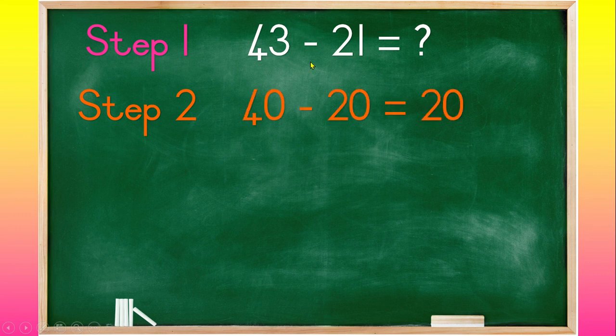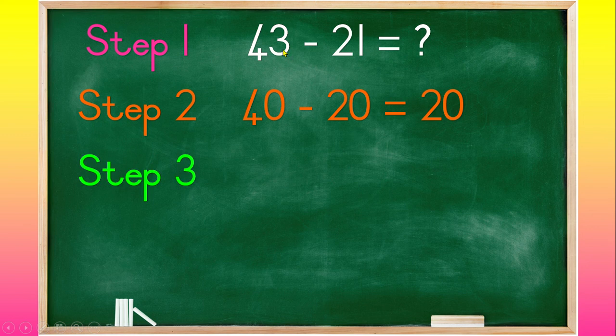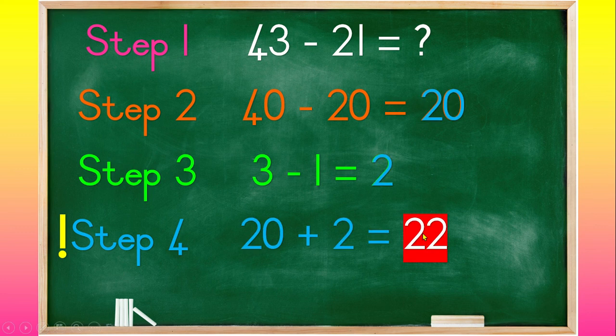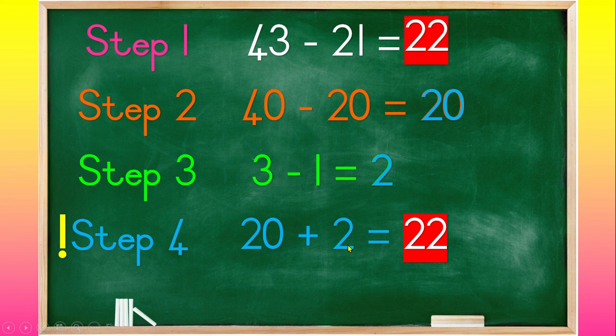Step 3 is to minus our ones. So 3 minus 1 equals 2. And then step 4 will always be to plus our answers. So we have 20 and 2. So 20 plus 2 equals 22. Therefore, 43 minus 21 equals 22.